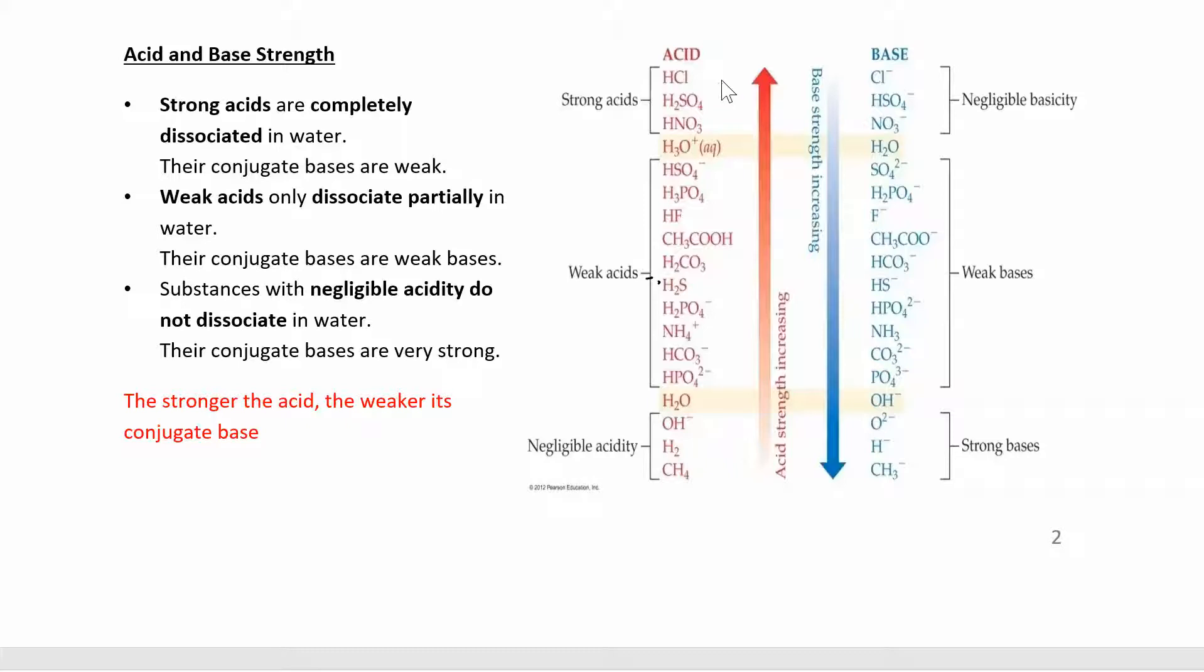So up here you have the really strong acids. That means when you put HCl in water, it dissociates completely into hydronium and the chloride ion, or nitric acid dissociates completely into H plus and NO3 minus. They split up into ions.